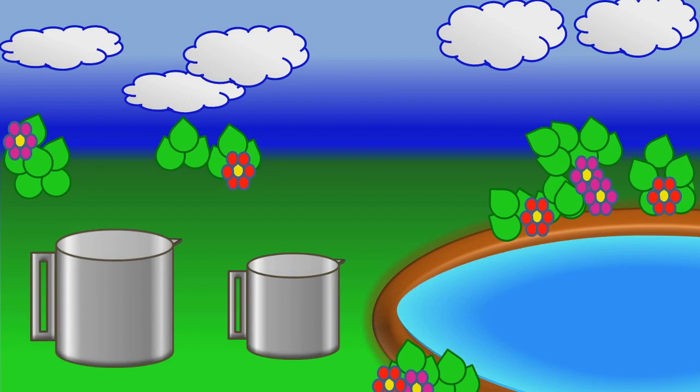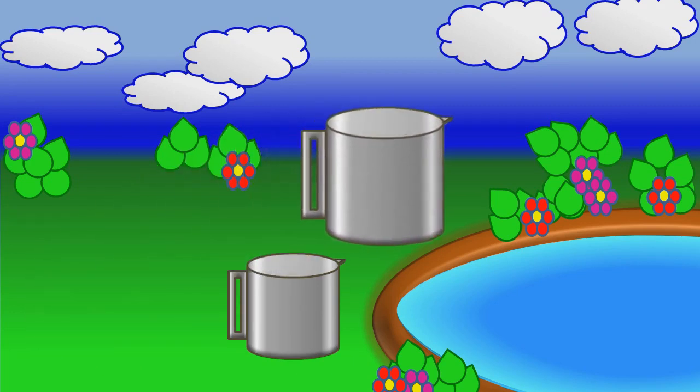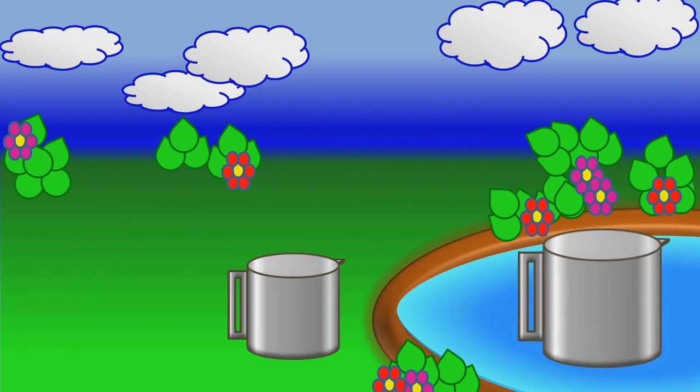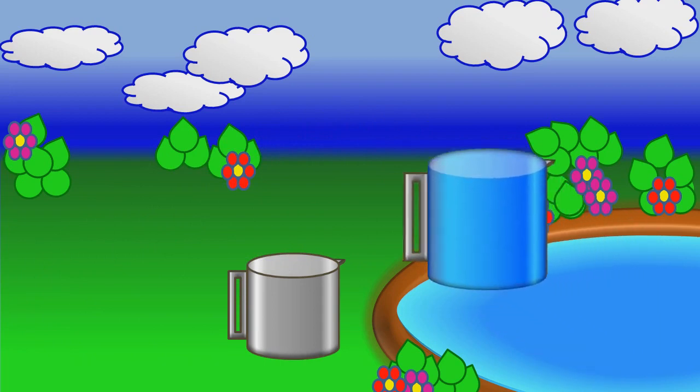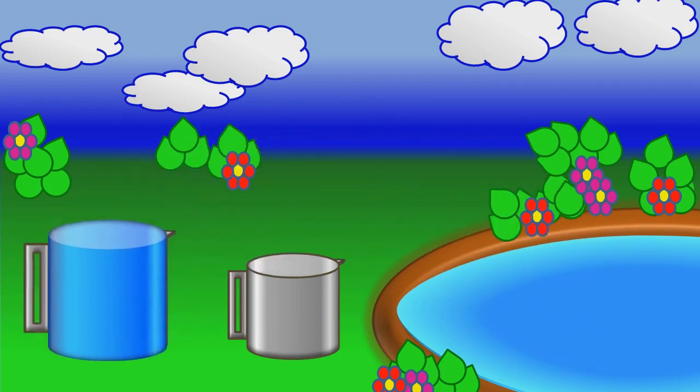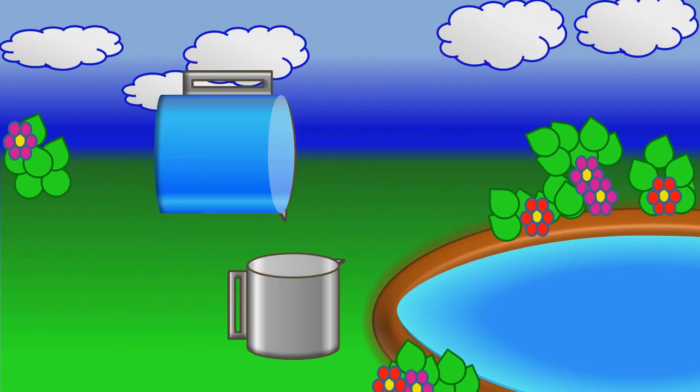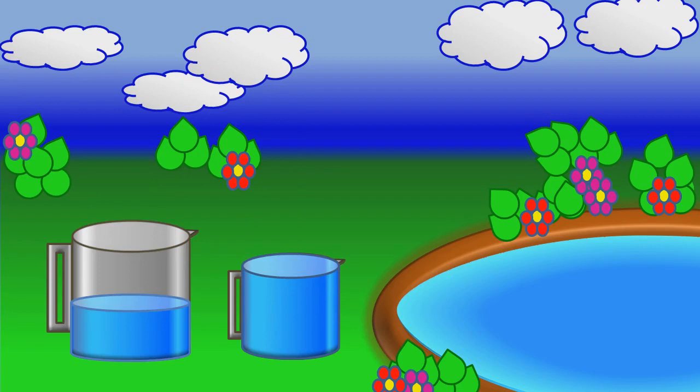Now fill the 5 liter container with water. Now pour the water into 3 liter container until it gets filled. Now 3 liter container has 3 liters of water, and 5 liter container has 2 liters of water.